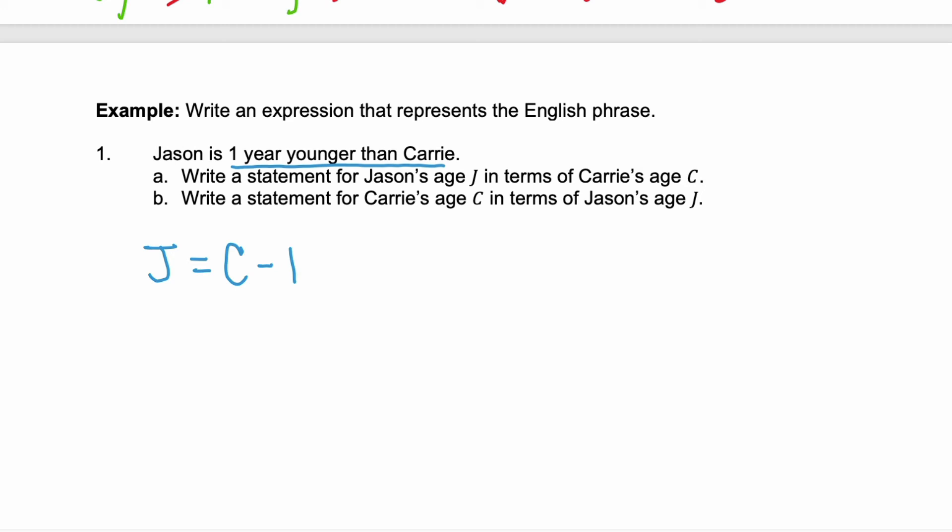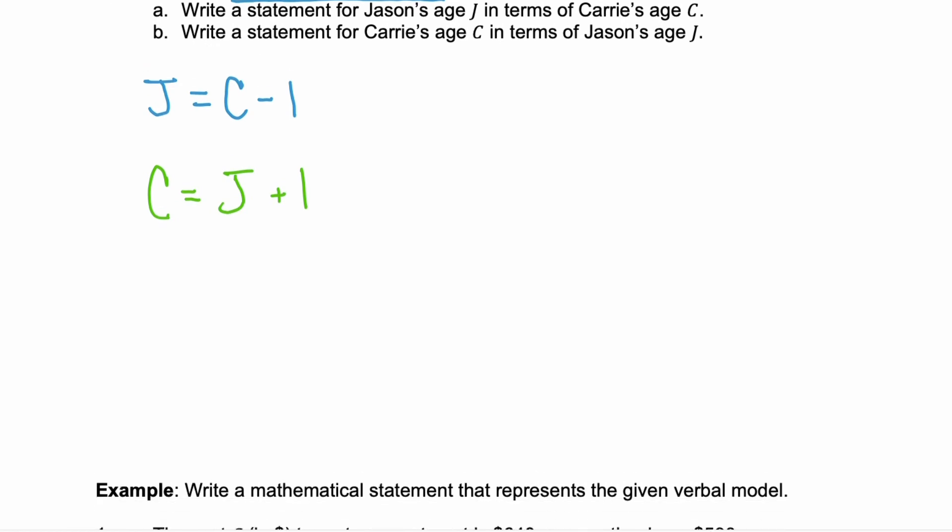Now, in part B, we need to write a statement for Carrie's age in terms of Jason's age. Well, if Jason is one year younger than Carrie, then Carrie is equal to Jason's age plus 1. Not too tricky.